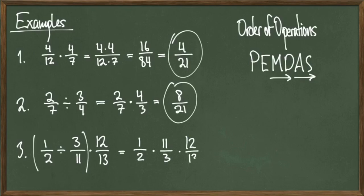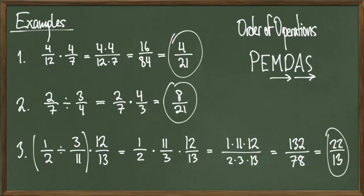Dividing 1 half by 3 elevenths gives us 1 half times 11 over 3, quantity times 12 over 13. The same rules of fractional multiplication still apply, so we just multiply across to get 1 times 11 times 12 over 2 times 3 times 13. This will give us 132 over 78, which simplifies to 22 over 13 once we cancel out the common factor of 6.